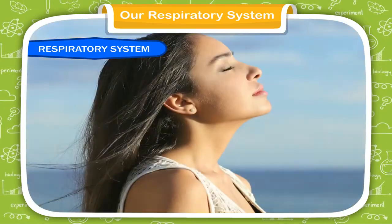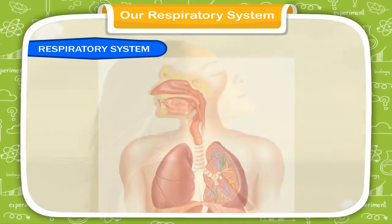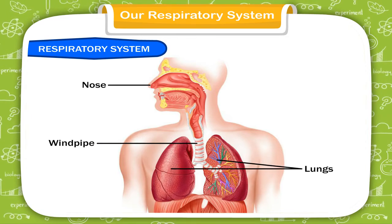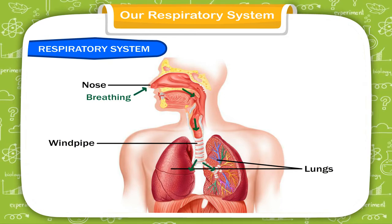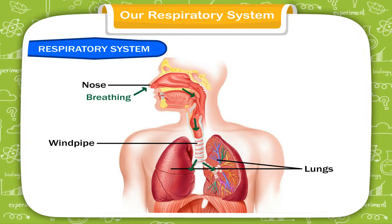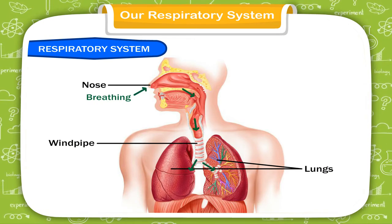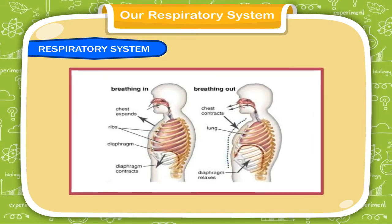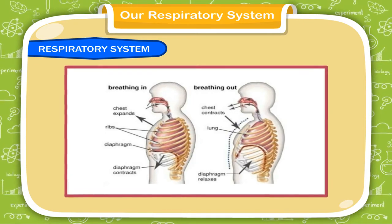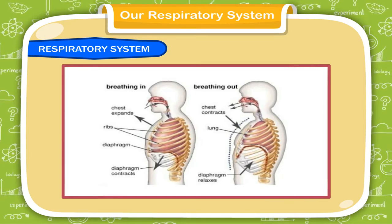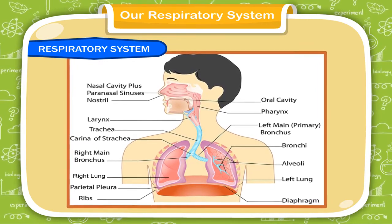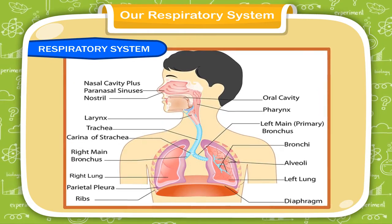We all breathe air to live. Our respiratory system consists of the nose, windpipe and lungs. While breathing, air enters through our nose and reaches the lungs through the windpipe. Our lungs absorb oxygen from the air and send it to the blood, which carries oxygen to all parts of the body. This oxygen burns the food we eat to give us energy. When we breathe out, harmful carbon dioxide comes out through our nose. Breathing purifies our blood and helps us obtain energy.